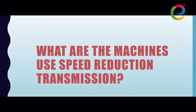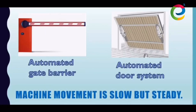Can you name some examples of machines or appliances that use speed reducing transmission? It's a very difficult question, so here are the examples. Remember when your parent drives into the car park — there is a car barricade at the entrance. Well, this mechanism uses a speed reducing transmission.